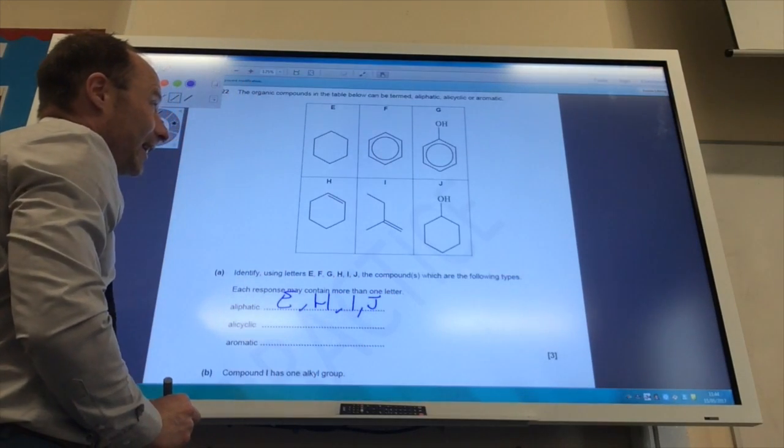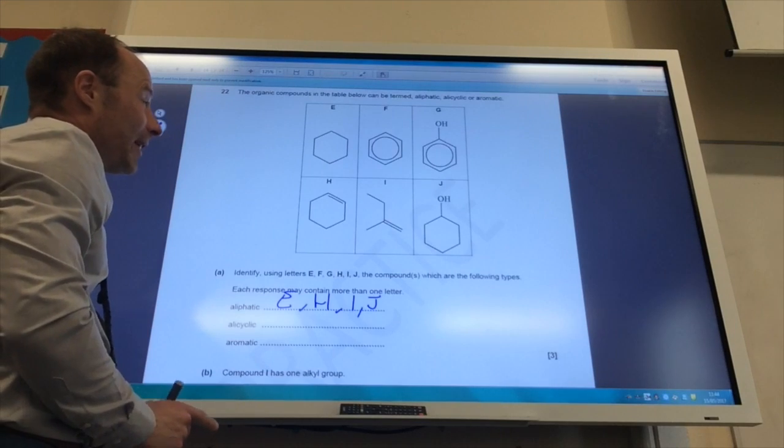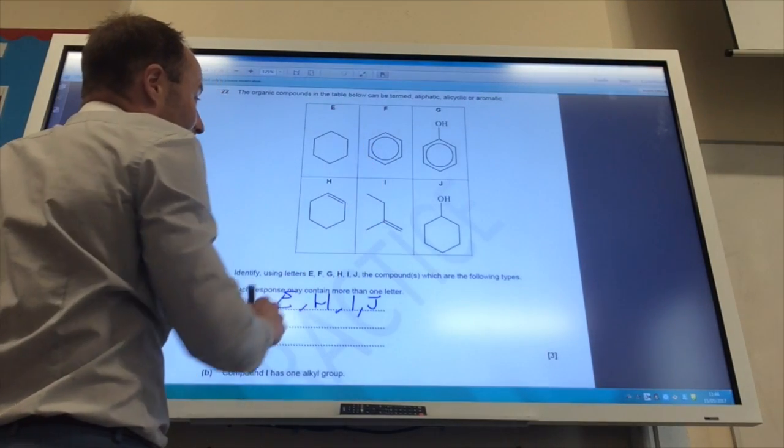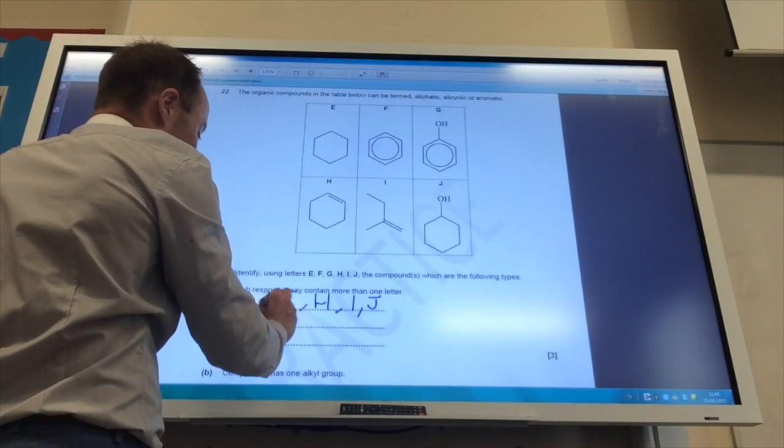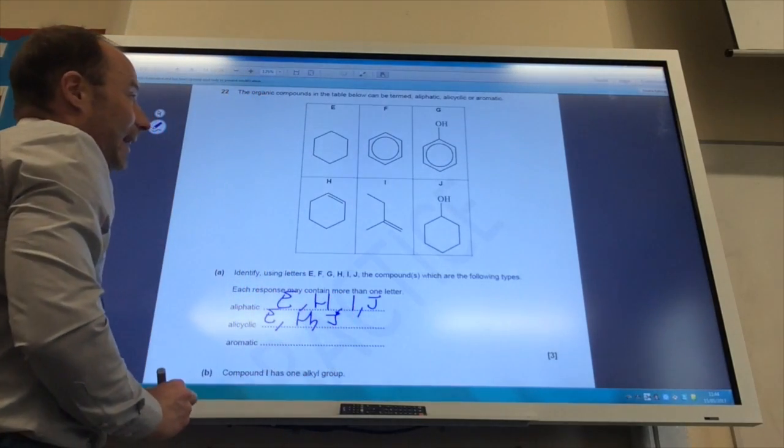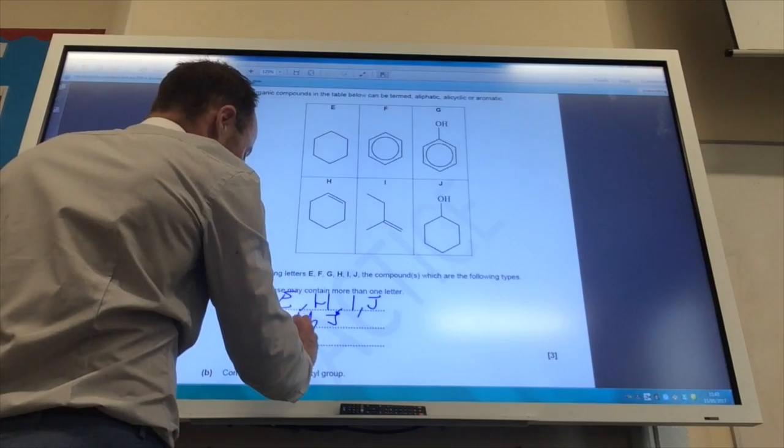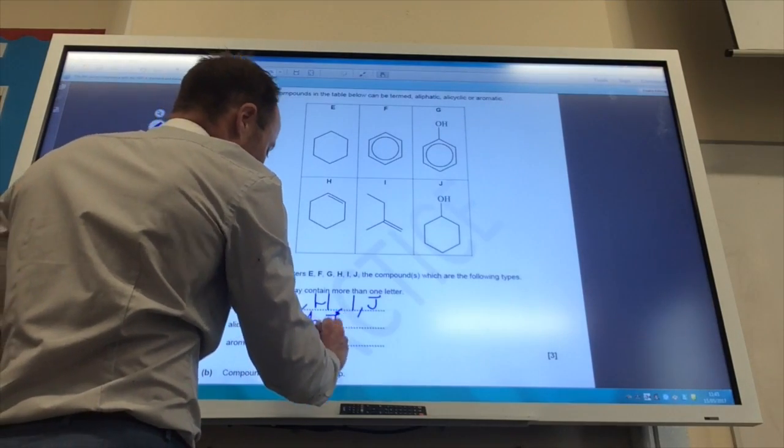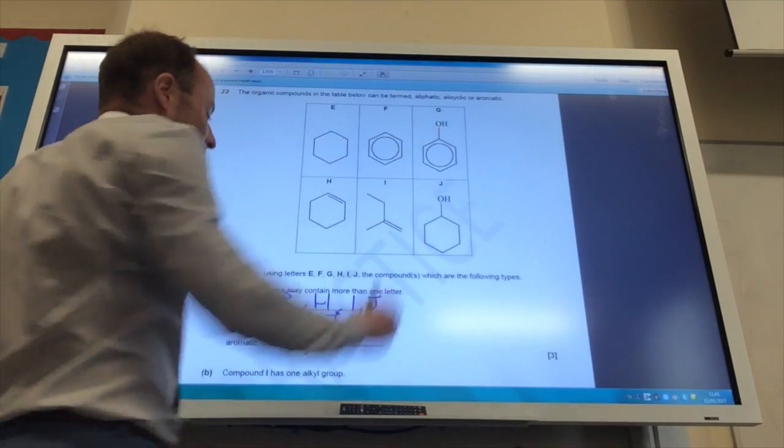Which are alicyclic? Well, they're the ones which aren't aromatic, but in a ring. So that's going to be E, H, and also J. And then, finally, which are aromatic? That is going to be F and also G, because you've got your benzene ring there.